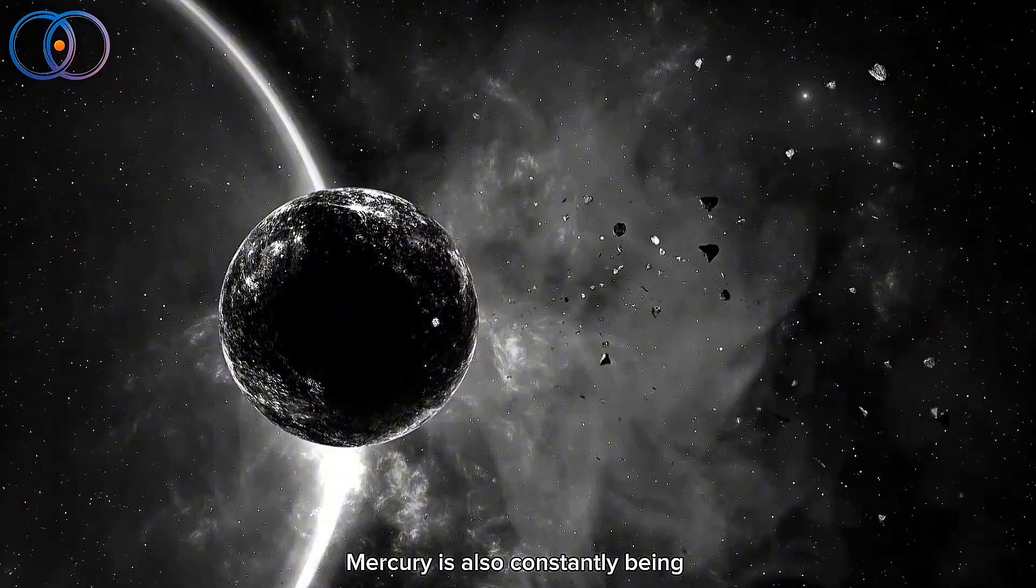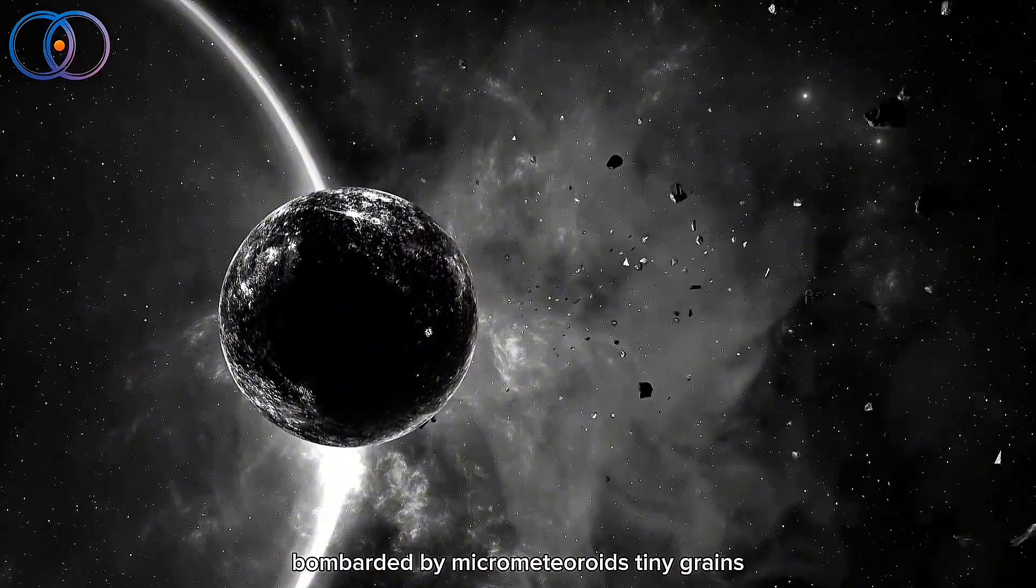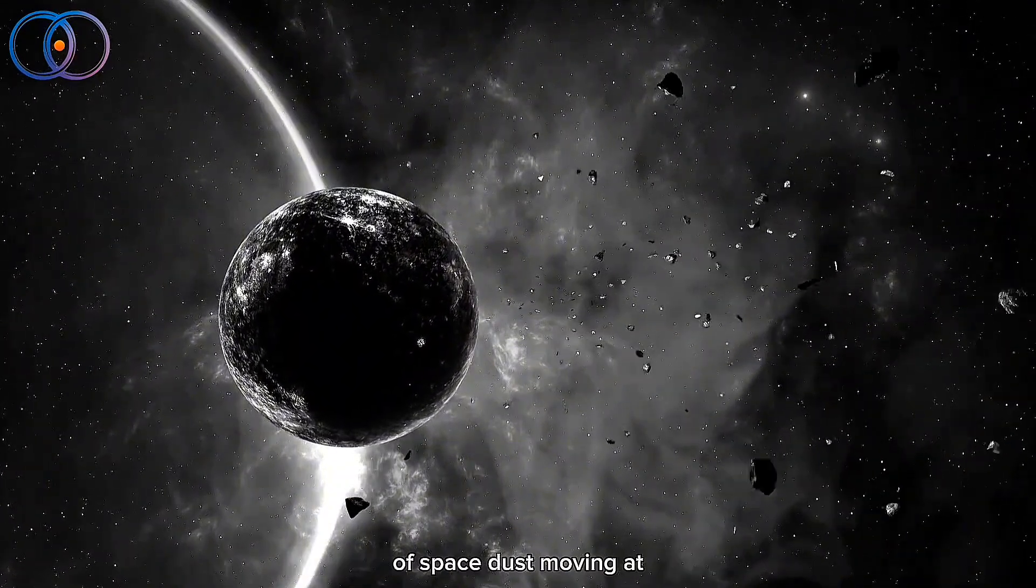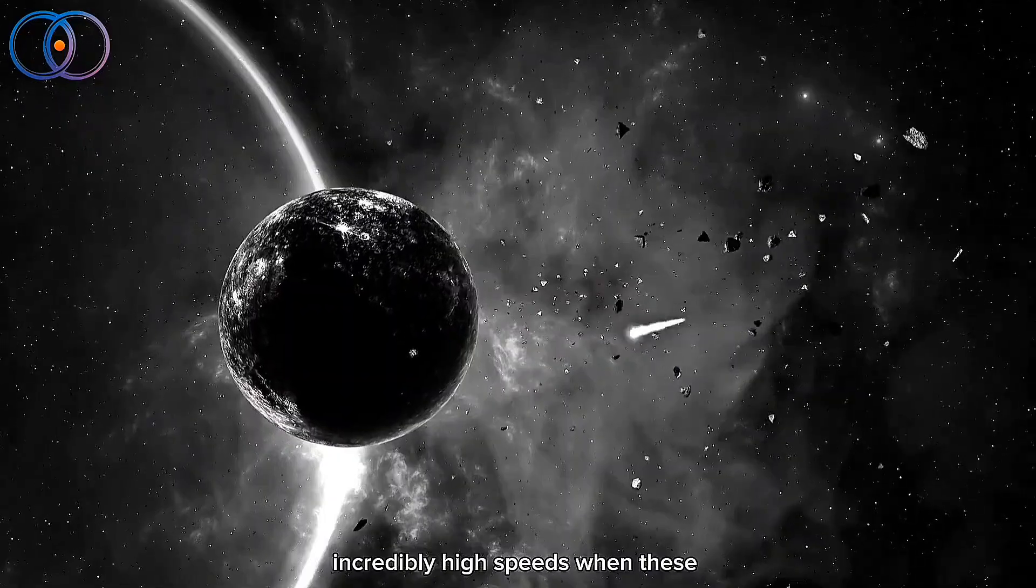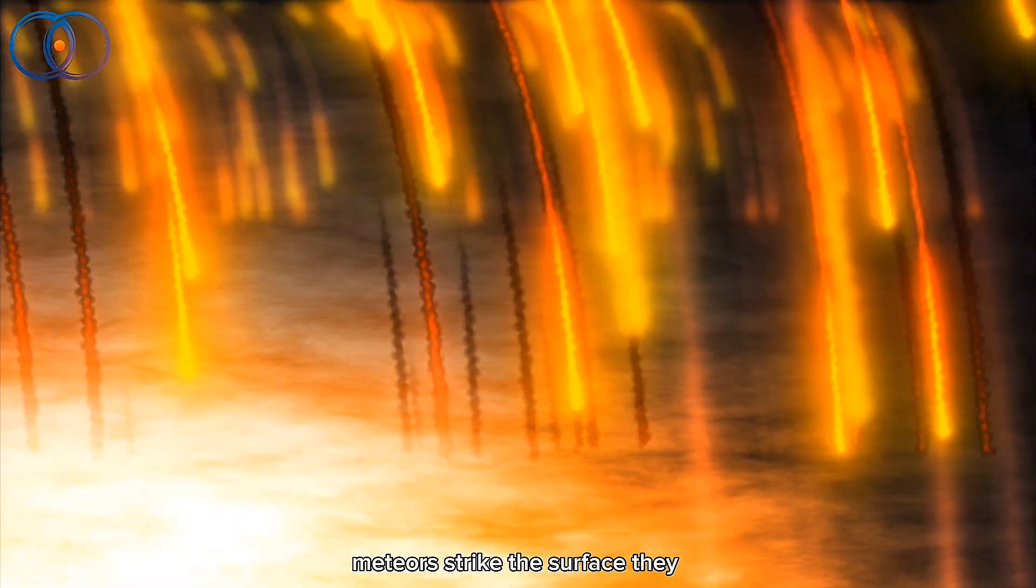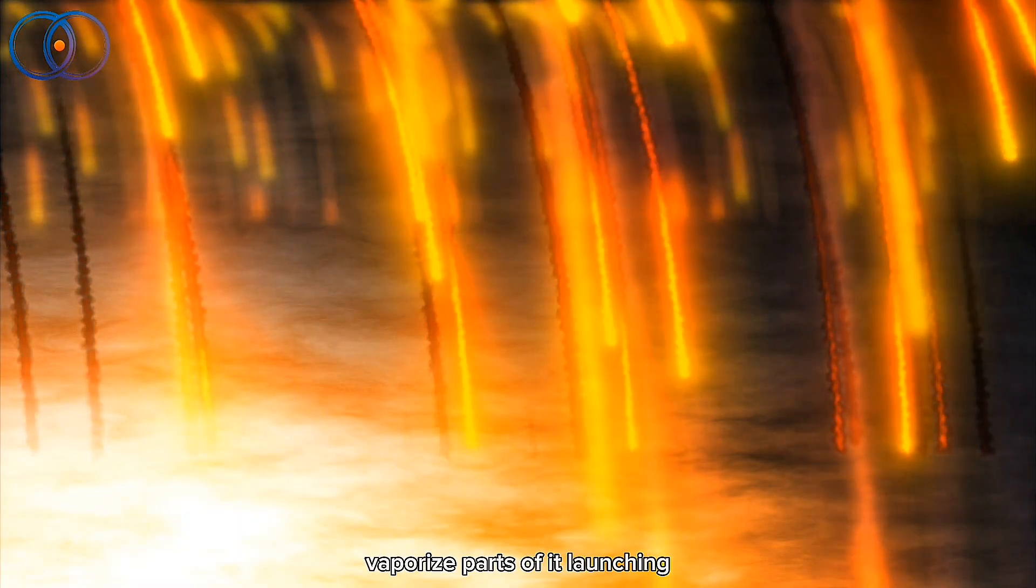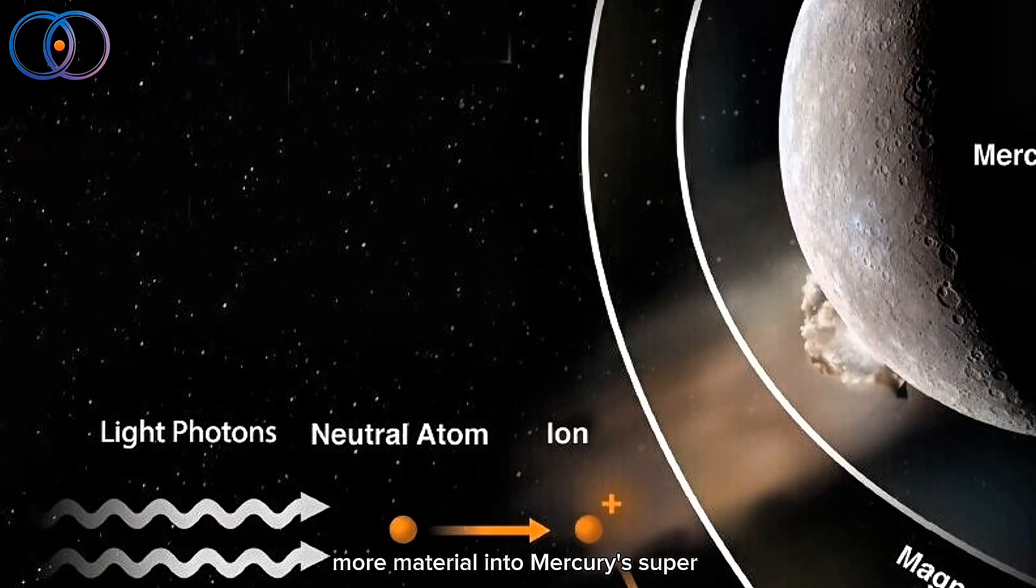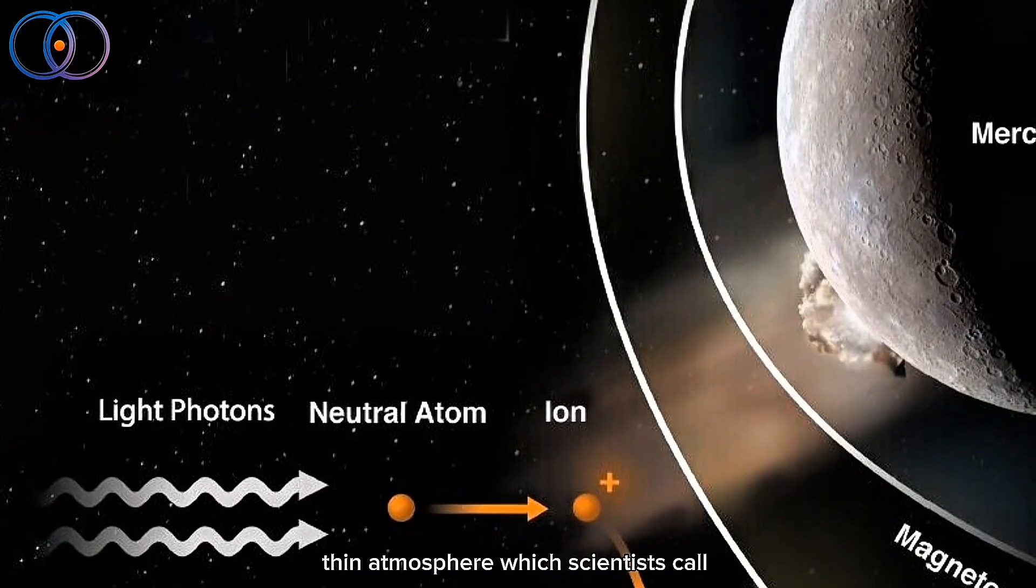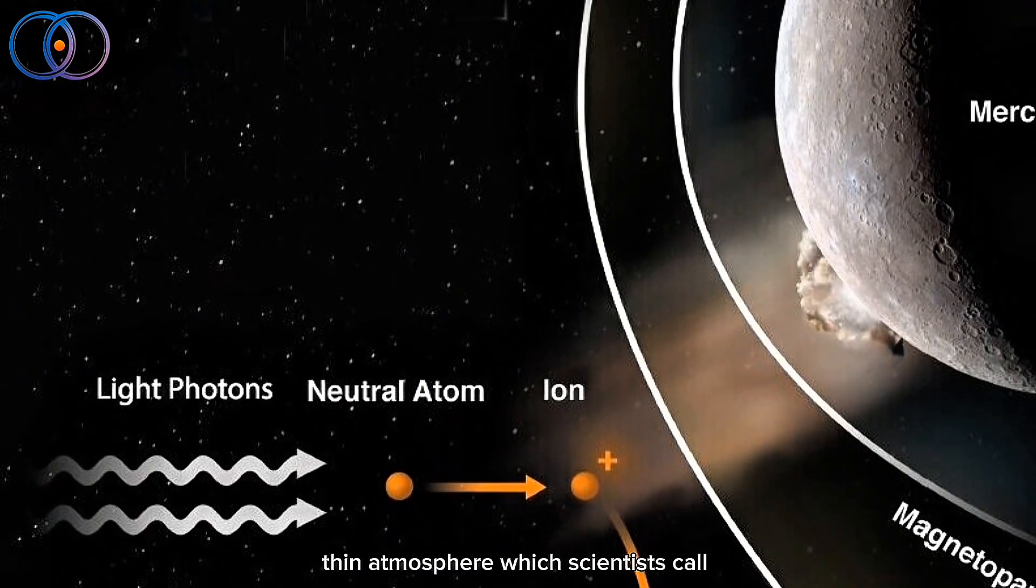Mercury is also constantly being bombarded by micrometeoroids, tiny grains of space dust moving at incredibly high speeds. When these meteors strike the surface, they vaporize parts of it, launching more material into Mercury's super-thin atmosphere, which scientists call the exosphere.